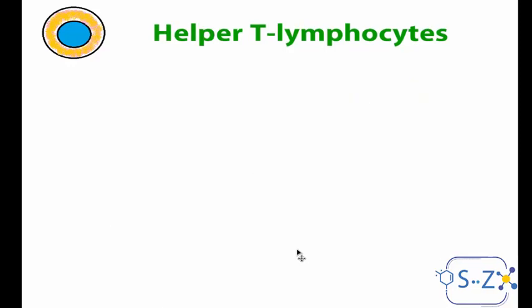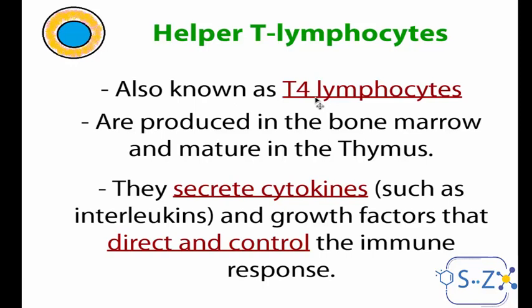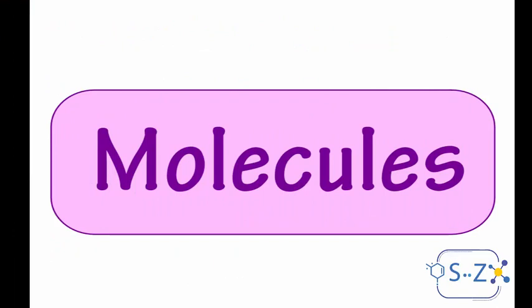Finally, the helper T lymphocytes, also known as T4 lymphocytes, are also produced in the bone marrow and matured in the thymus. They secrete cytokines — special substances that direct and control immune responses. They are the coordinators of the immune system. Helper T lymphocytes do not kill; they only control.